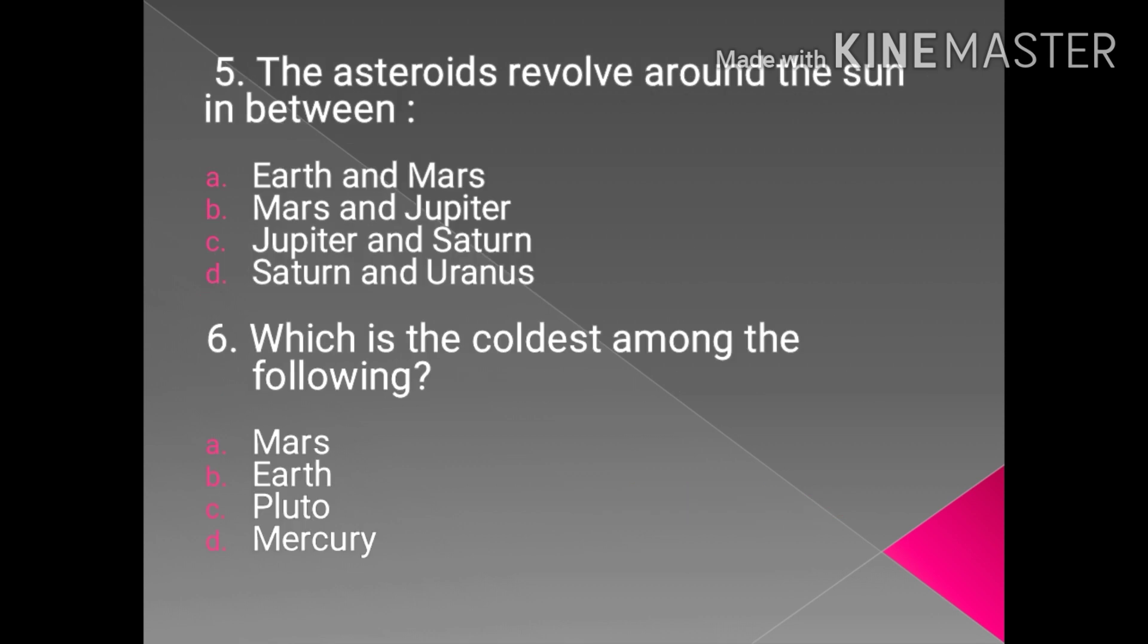Fifth question we have: the asteroids revolve around the Sun in between... the options are Earth and Mars, Mars and Jupiter, Jupiter and Saturn, Saturn and Uranus. What do you think which is the correct answer? The answer is Mars and Jupiter.